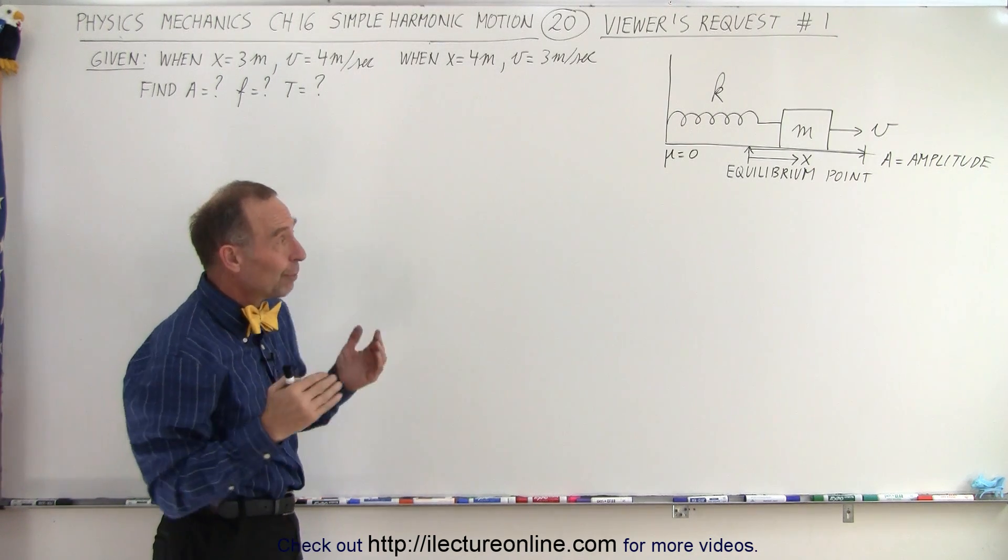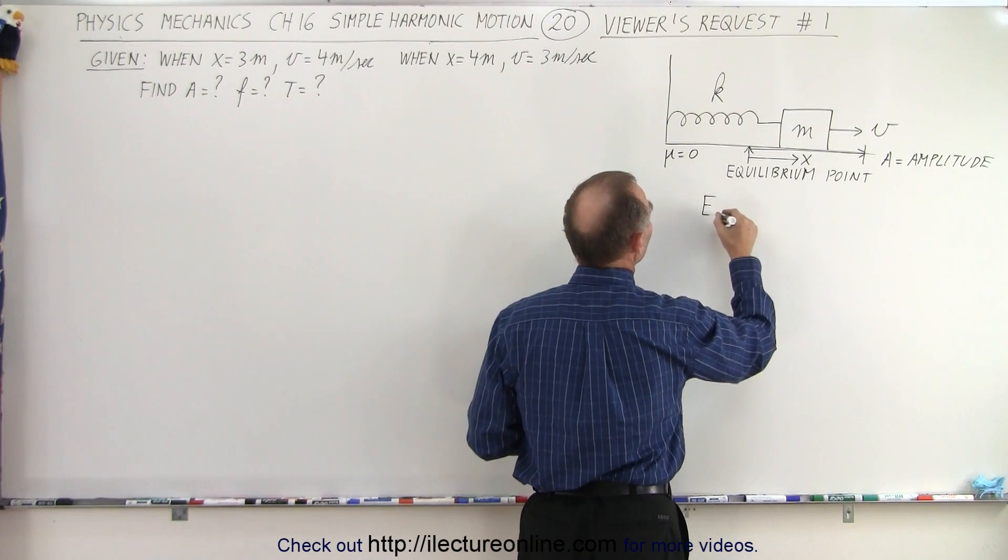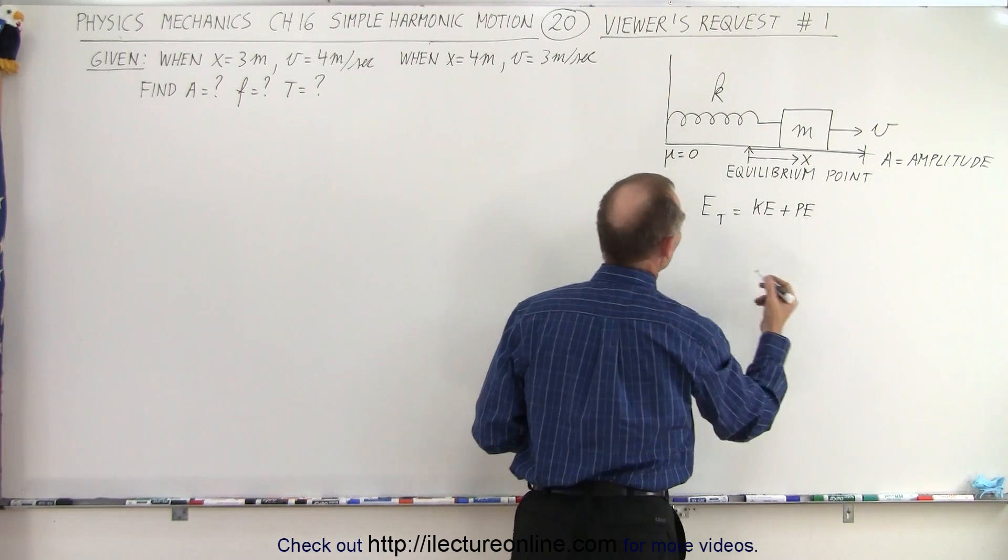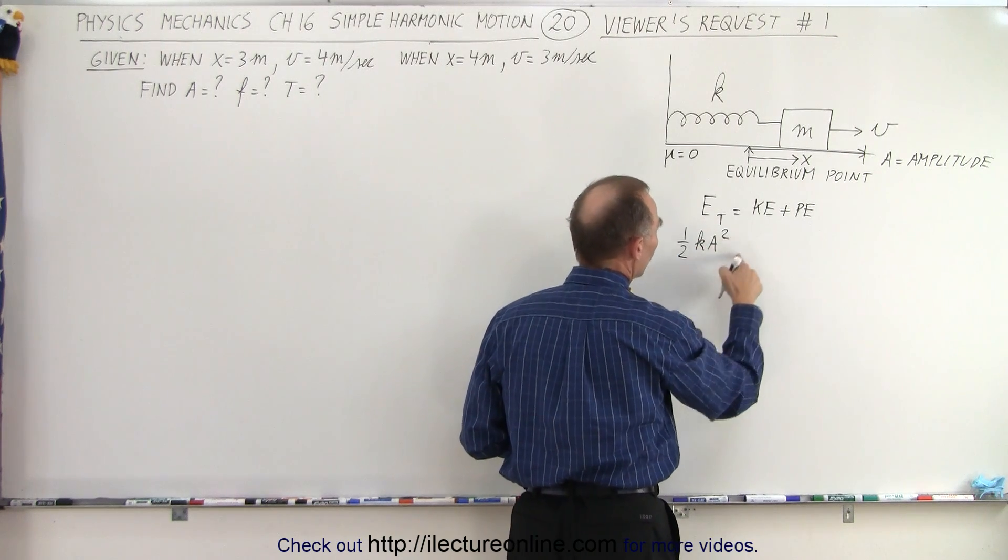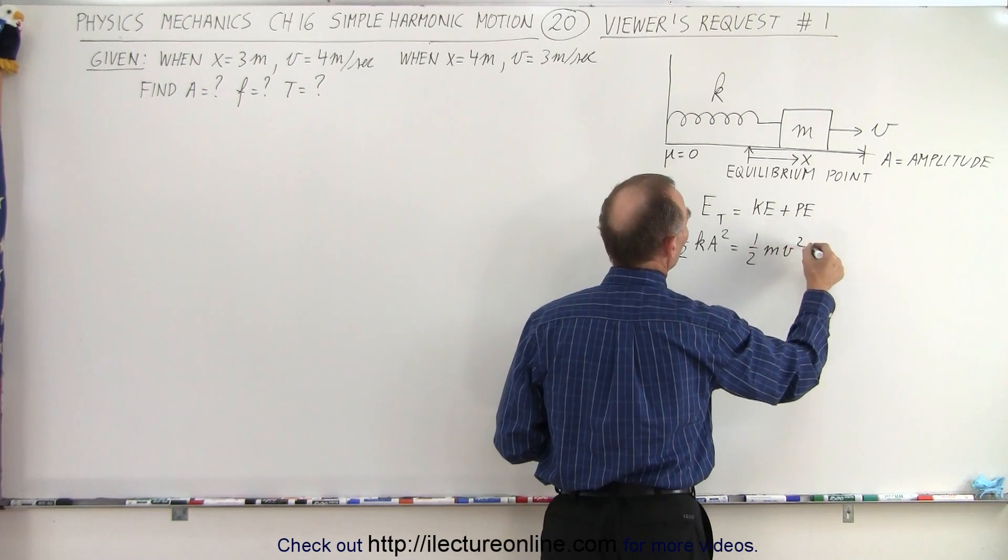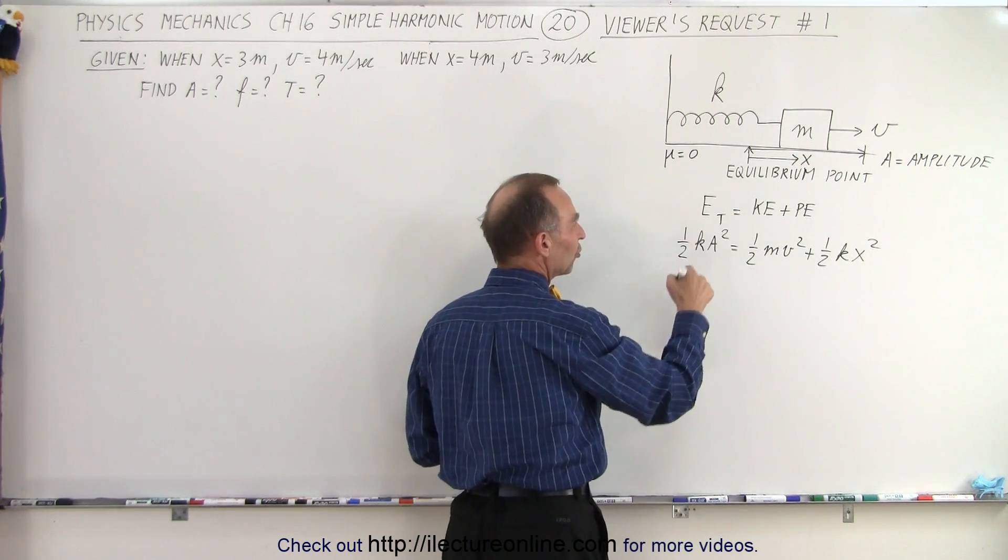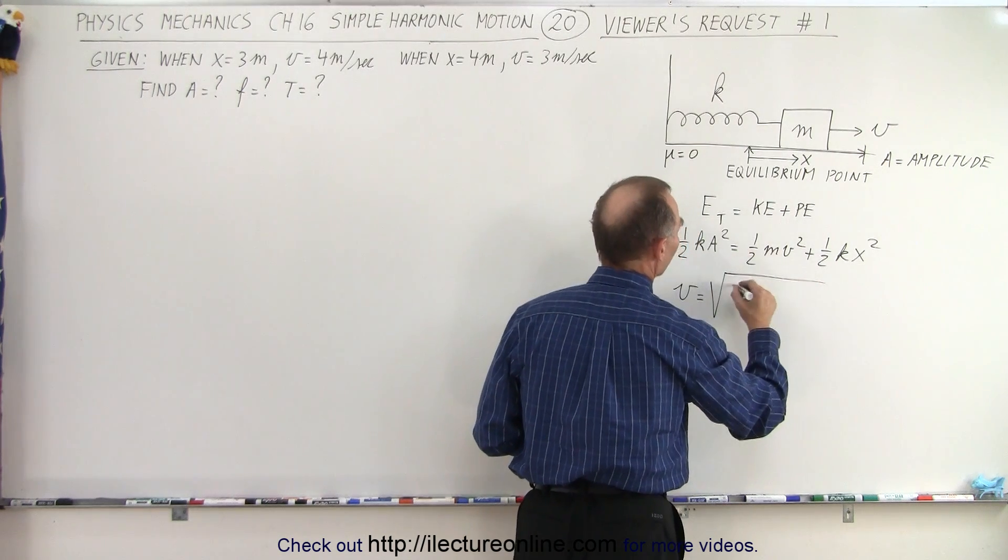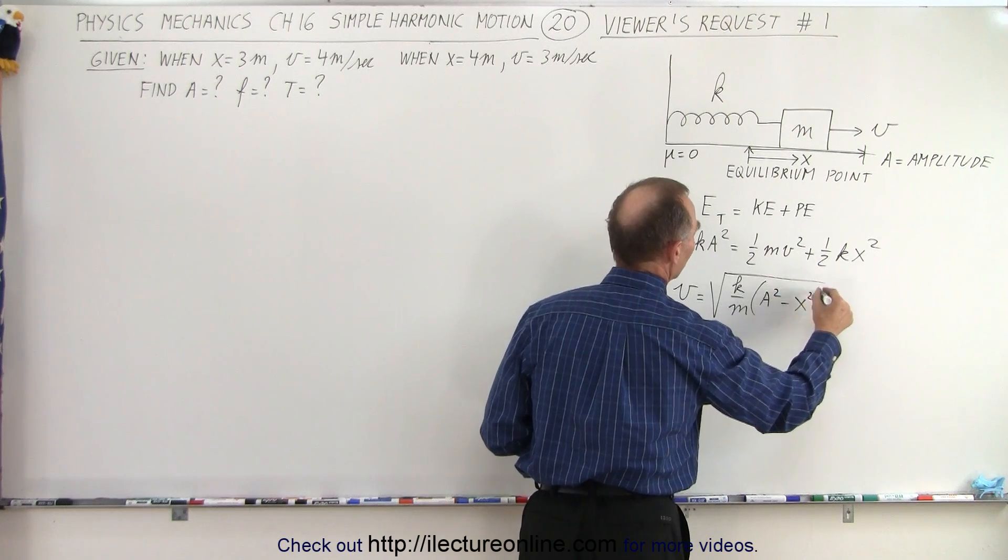It's always a good idea to go back to the basics. The basic equation is that the total energy is equal to the sum of the kinetic energy plus the potential energy, which means that one-half k a squared, which is the total energy put into the system, is equal to one-half m v squared plus one-half k x squared. And then if we solve this equation for v, which we've shown plenty of times, v would be equal to the square root of k over m times a squared minus x squared.